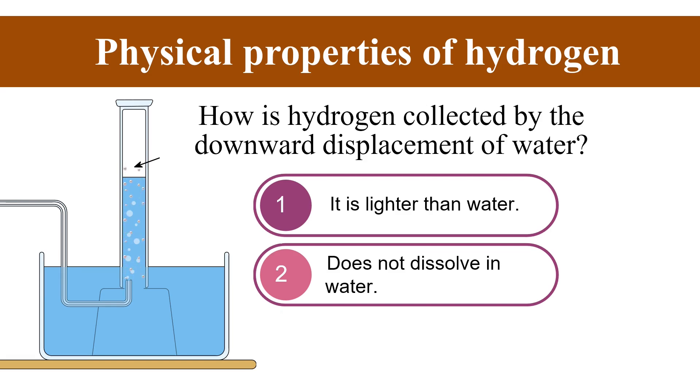So what happens is since hydrogen gas is lighter than water it rises up and gets collected upwards. And when it gets collected here it displaces the water downwards as it gets collected more and more.